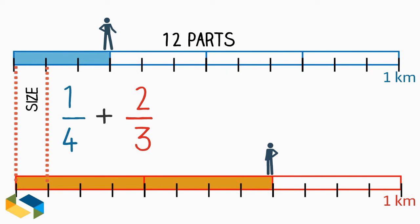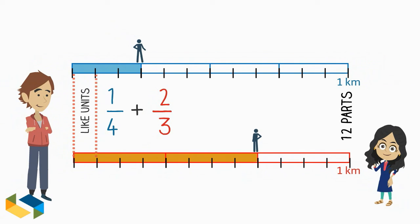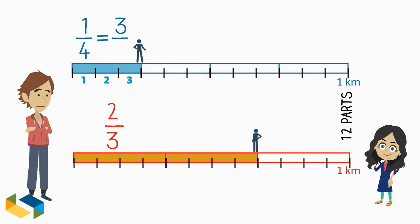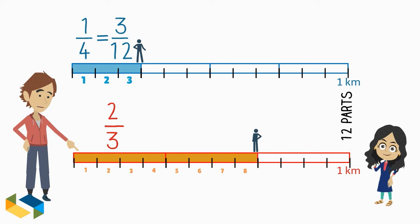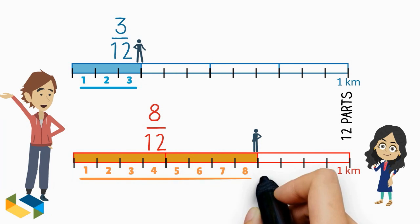Now because the parts are of the same size, adding them would be similar to adding like units together, so we proceed with the addition. The distance one-fourth becomes three out of twelve parts, or three upon twelve. And the distance two-thirds, as you can see, becomes eight upon twelve. Just add this three here with the eight below.